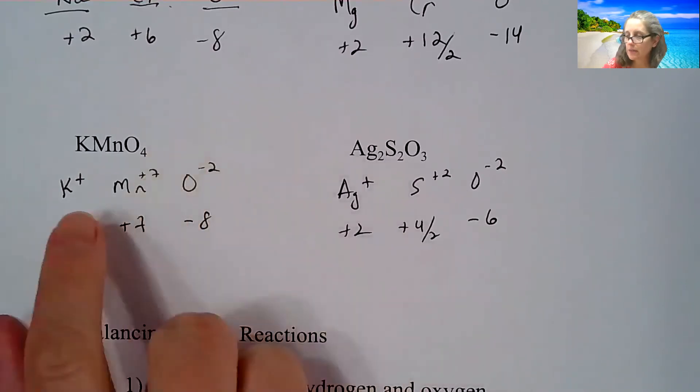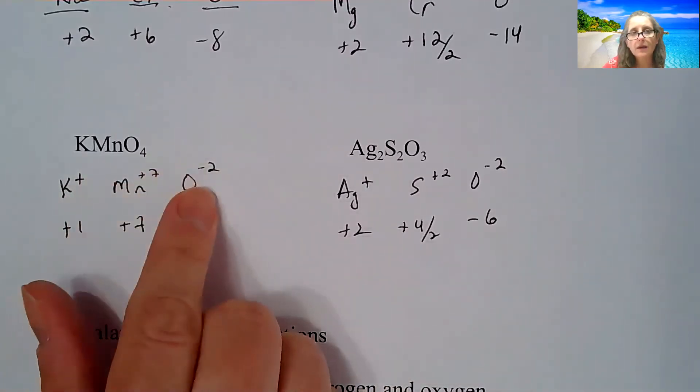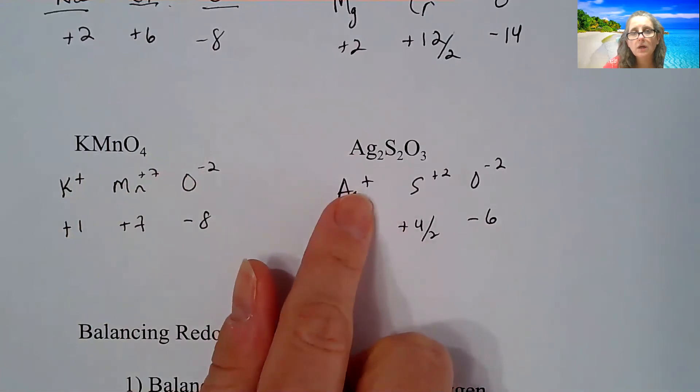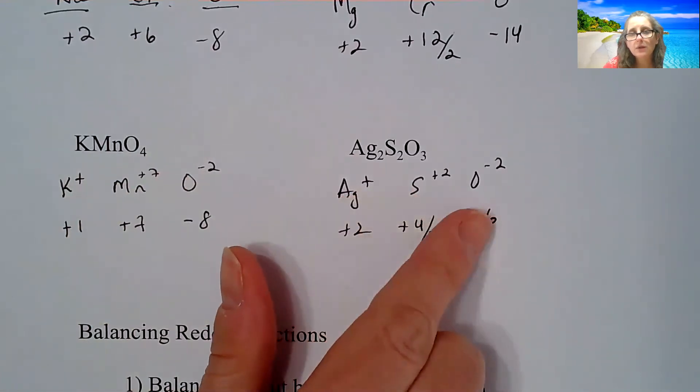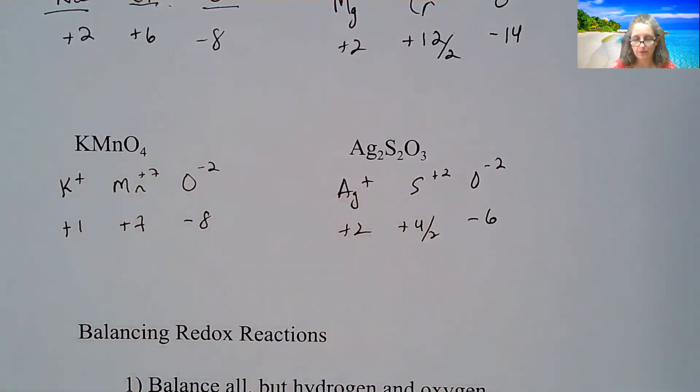So here's the answers. Potassium is +1, manganese is +7, oxygen -2, silver is +1, sulfur is +2, oxygen is -2.